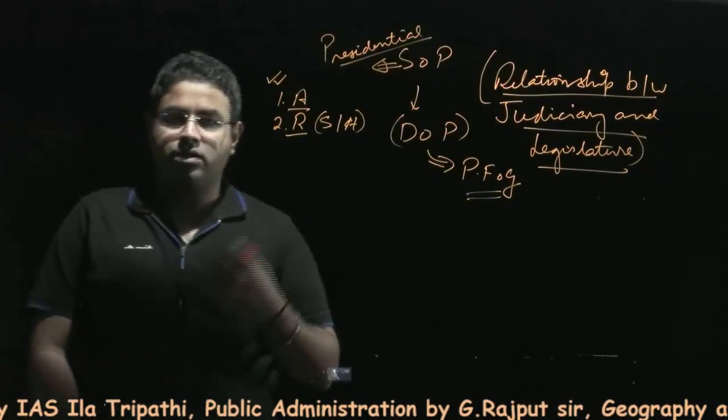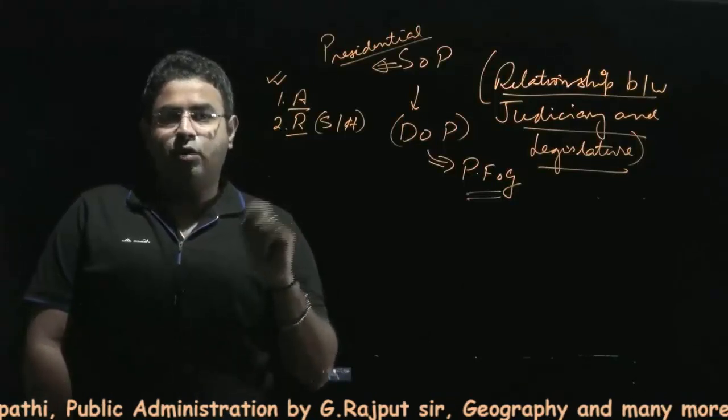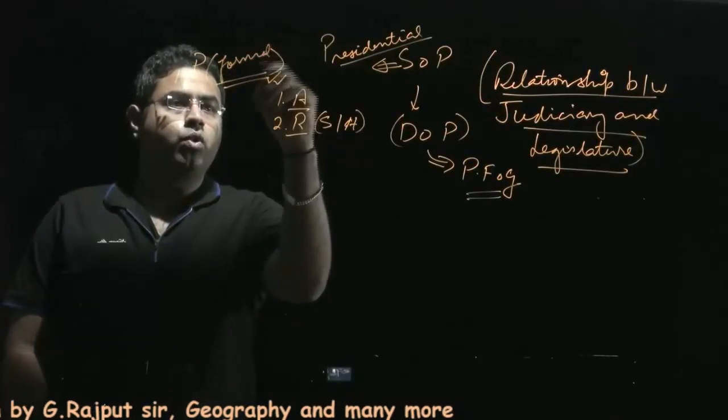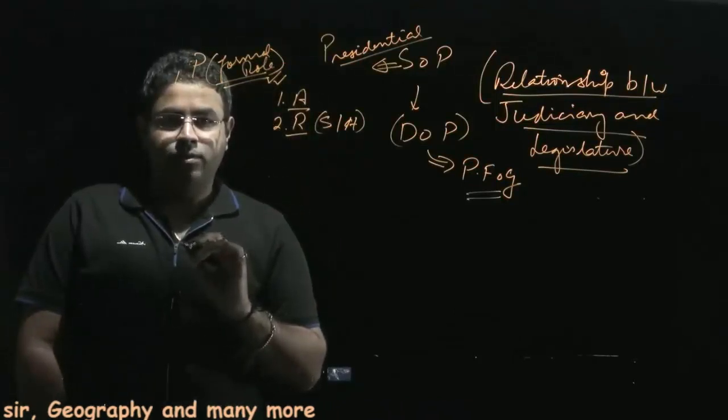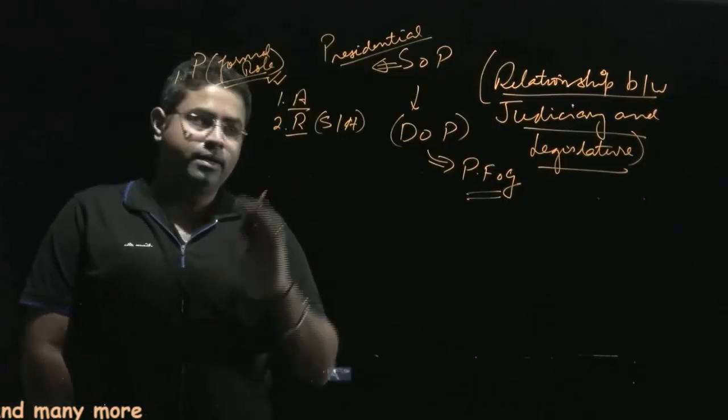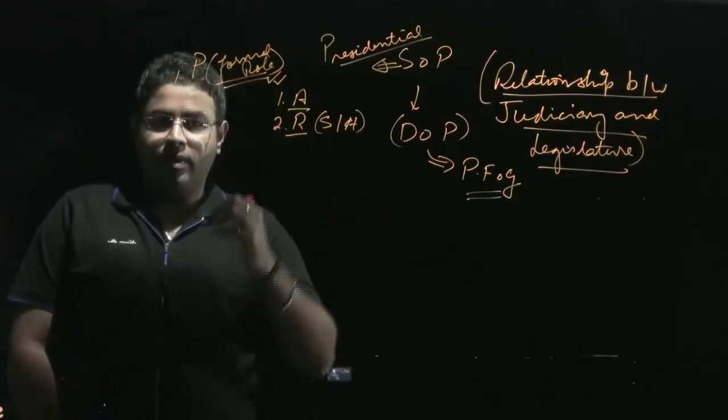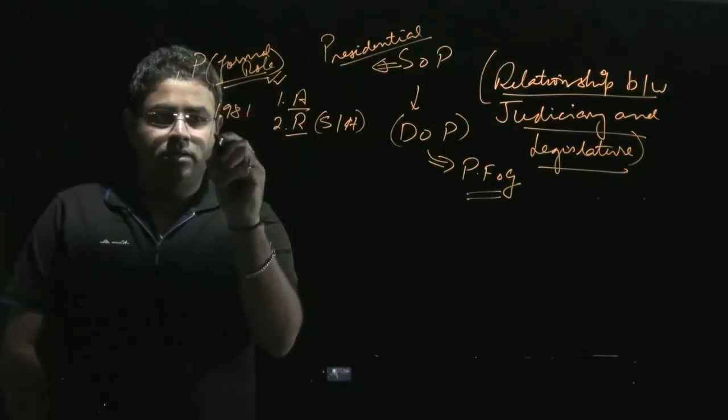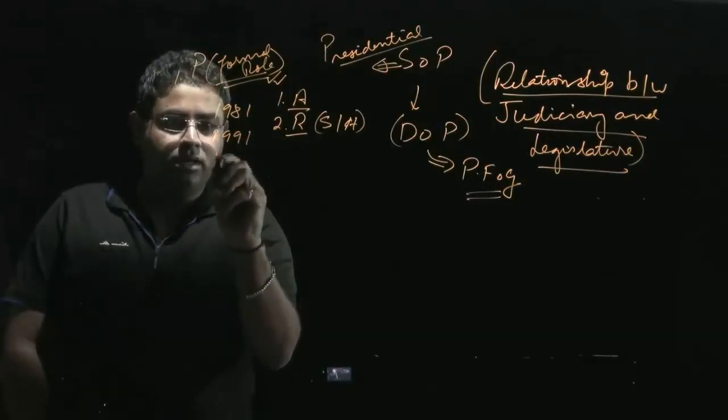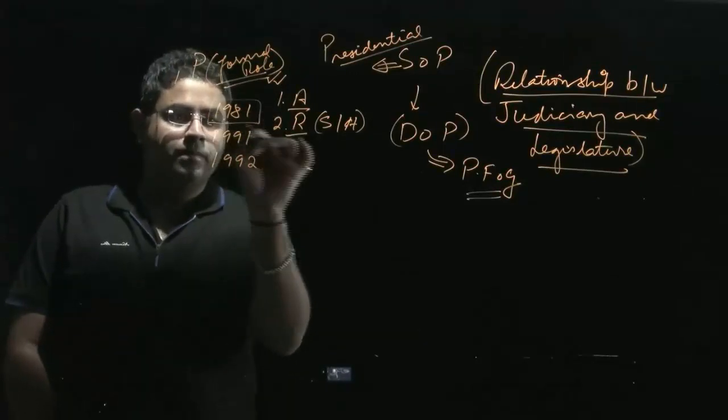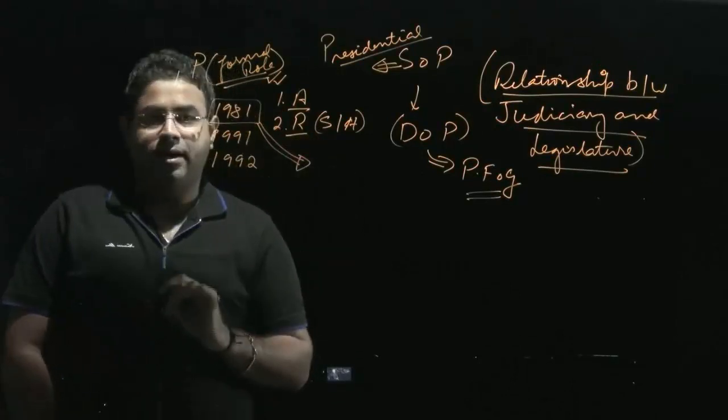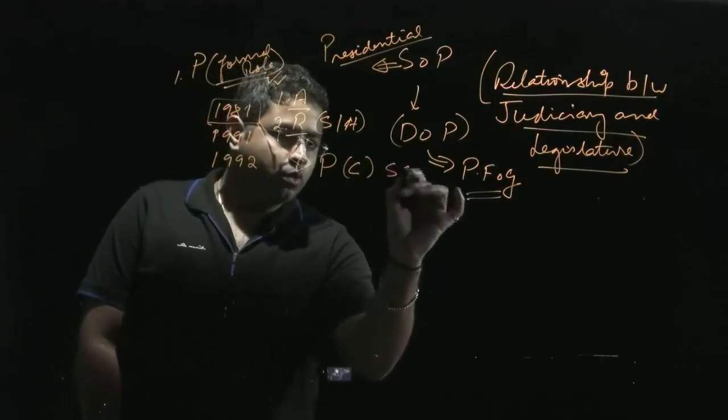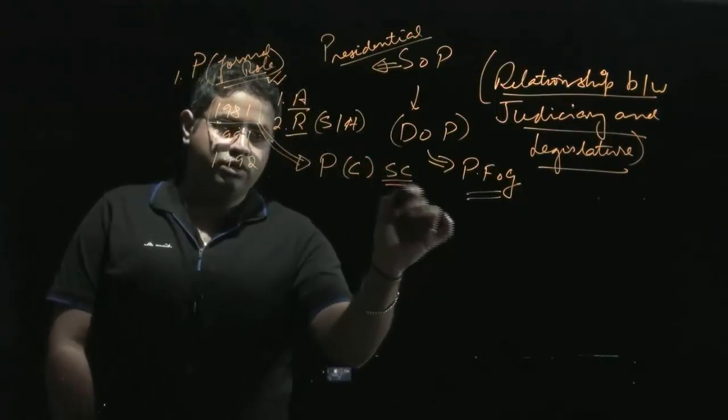There are two important things: one is about the appointment and the second is about the removal of the judges of the Supreme Court or High Court. When it comes to appointment, the judges are appointed by the president. The president more or less performs only the formal role in it. The substantive role, the essence of the role is primarily played by the judiciary. When we see the judicial pronouncements - First judges case, second judges case and third judges case - the First judges case said the president should appoint the judges but with the consultation of the Supreme Court.